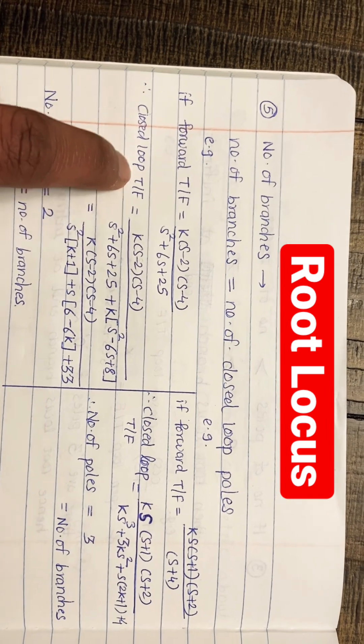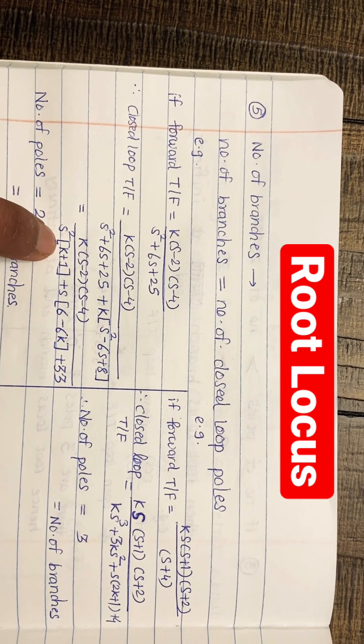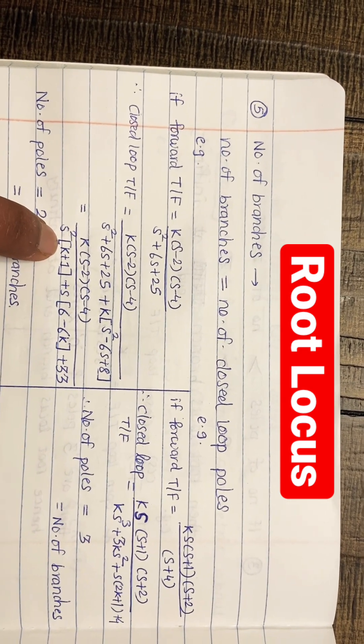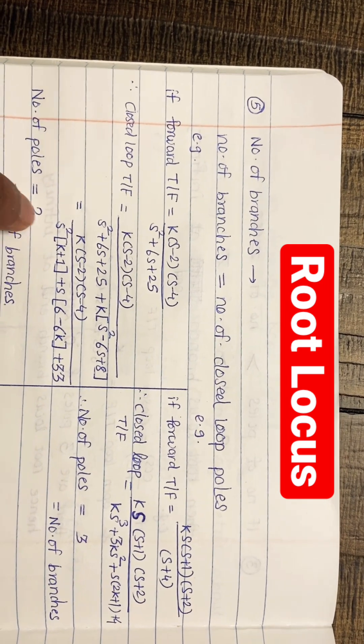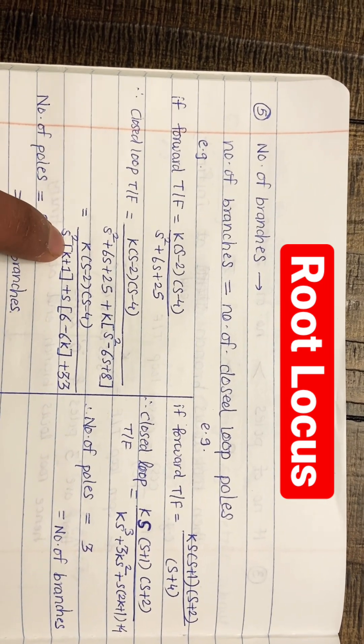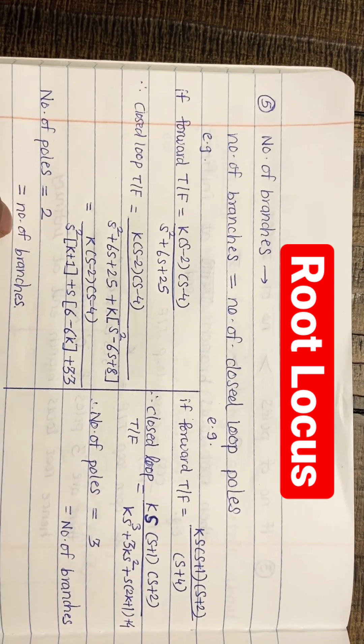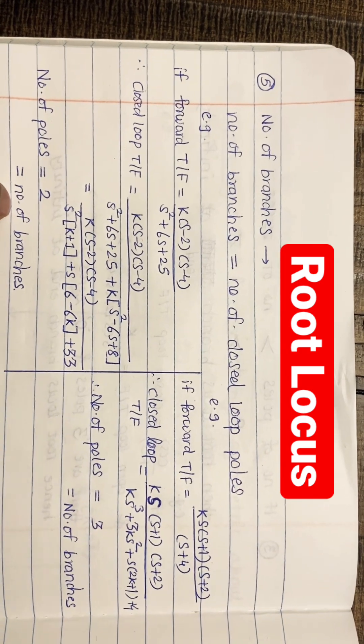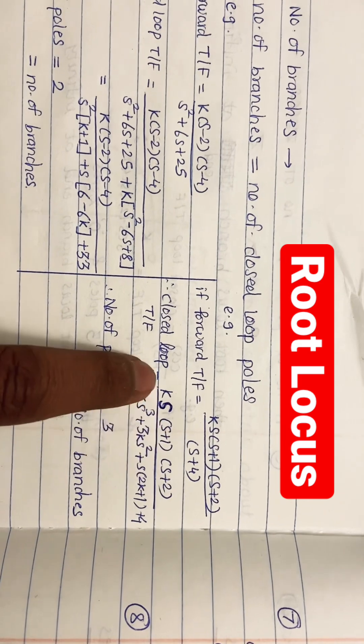Then find out the closed loop transfer function. The degree of the polynomial at the denominator would become the number of poles. Since the maximum degree of the polynomial is 2, then number of poles will be 2. Hence, number of root locus branches will be 2.